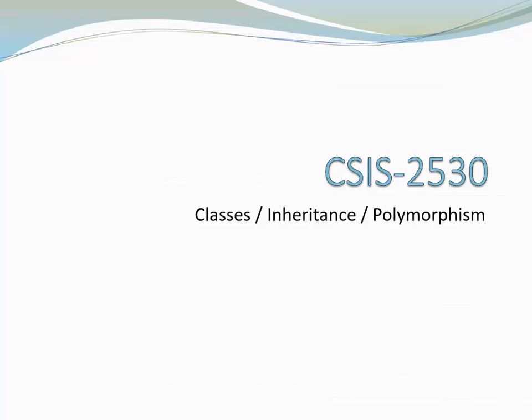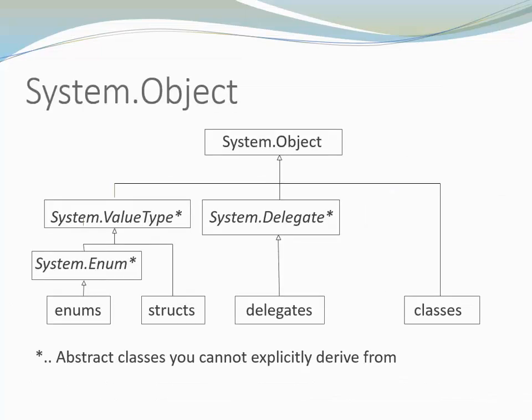In this video, we will have a look at C-sharp classes, inheritance, and polymorphism. Value types, delegates, and classes all derive from system object. However, only classes can be used to build an inheritance hierarchy. That means only classes can derive from another class.